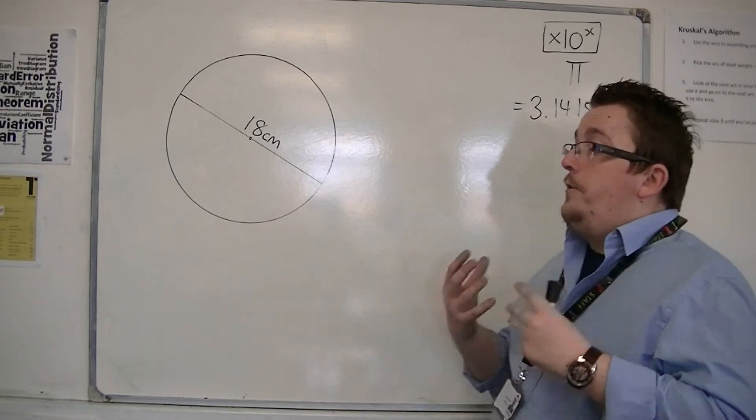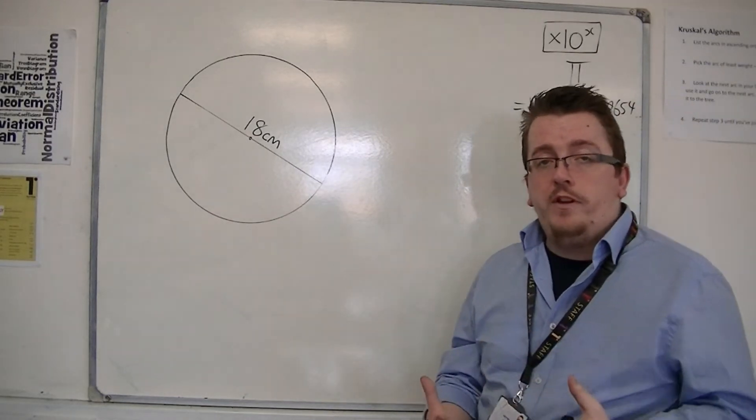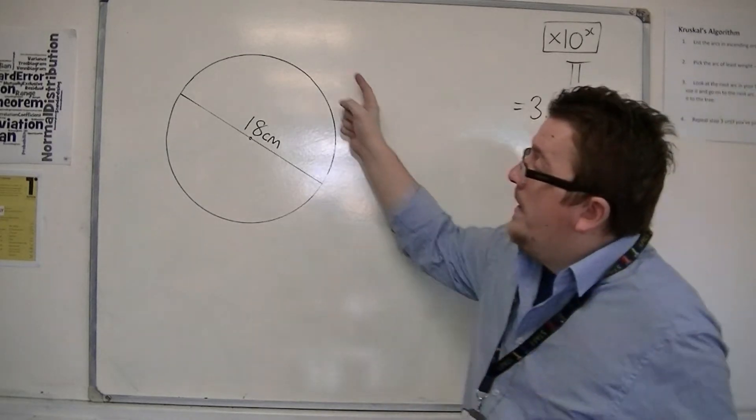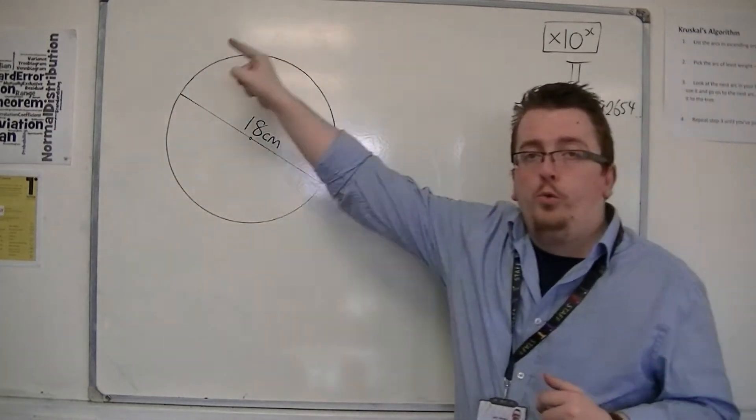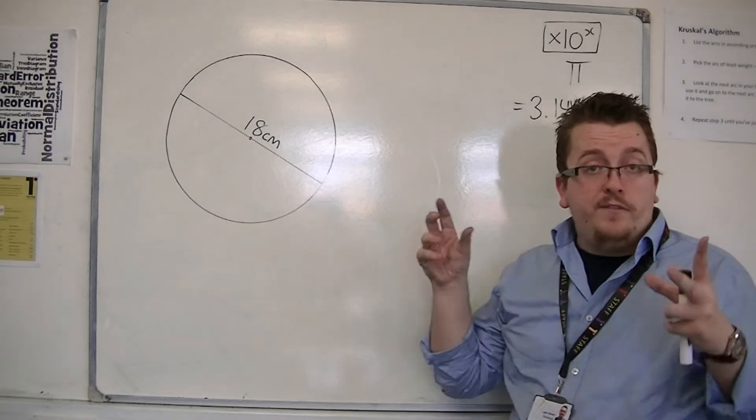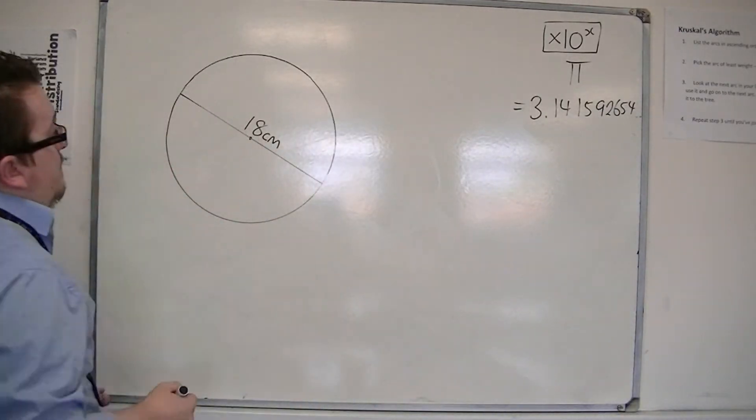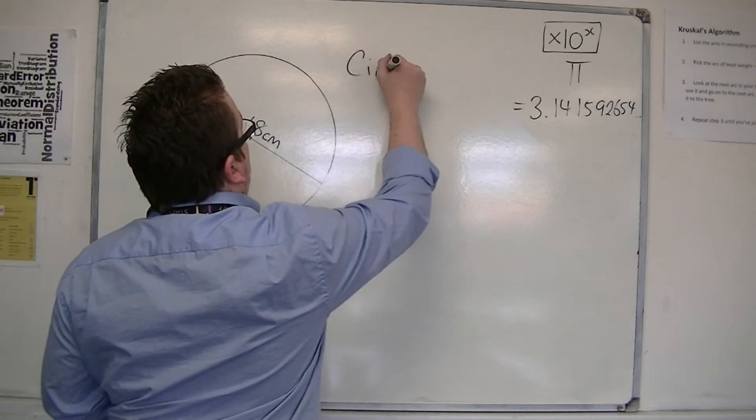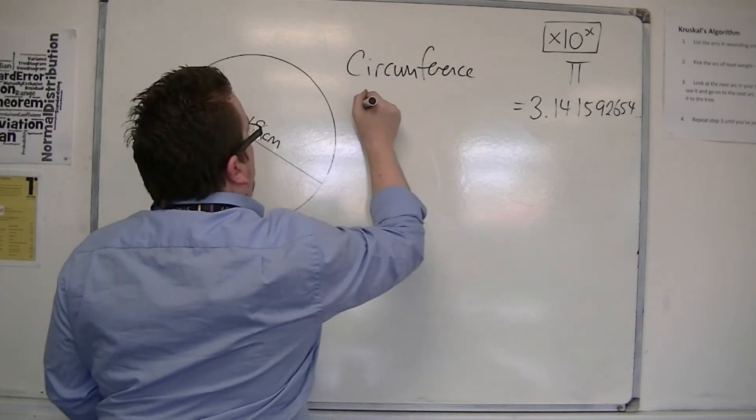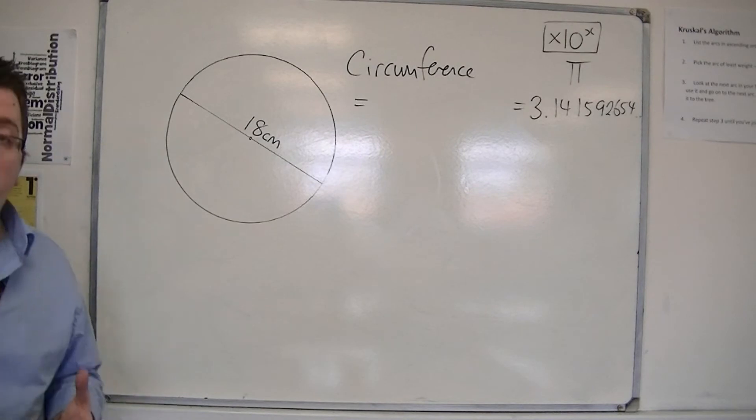And it can be used to find the length of the circumference of the circle. Now, the circumference is that length, all the way around the outside, effectively the perimeter of the circle. And it can be found using one of two formulas.